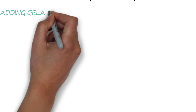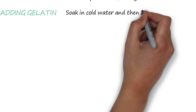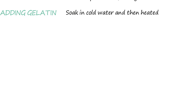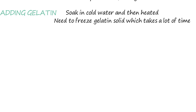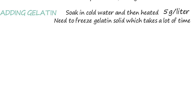Adding gelatin. Gelatin needs to be firstly soaked in cold water and then heated to be fully dispersed. You need to freeze your gelatin solid, where the whole process takes a lot of time, using 5 grams of gelatin per liter.